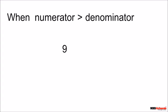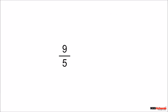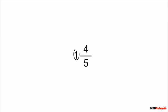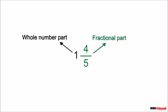When the numerator is greater than the denominator, let us plot 9 upon 5 and minus 9 upon 5. We will plot 9 upon 5 first. When the numerator is greater than the denominator, we first convert it into a mixed number. To do so, we divide 9 by 5. Thus 9 upon 5 can be written as 1 whole and 4 upon 5, where 1 is the whole number part and 4 upon 5 is the fractional part.